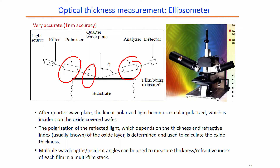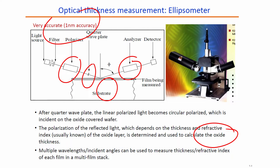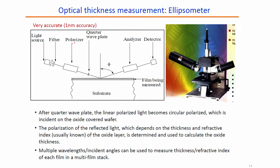What kind of analyzers are used for the ellipsometer? After the quarter wave plate, the linearly polarized light becomes circularly polarized, which is incident on the oxide-covered wafer. The polarization of the reflected light, which depends on the thickness and refractive index of the oxide layer, is used to calculate the oxide thickness. The ellipsometer is extremely accurate with an accuracy of about 1 nanometer. Multiple wavelengths and incident angles can be used to measure thickness and refractive index of each film in a multi-film stack. Your homework is to understand the role of the polarizer, quarter wave plate, analyzer, and what kind of detectors, light sources, and filters are used.